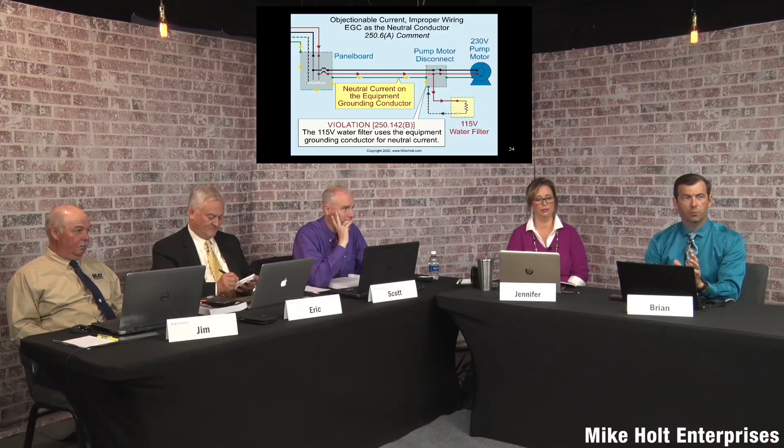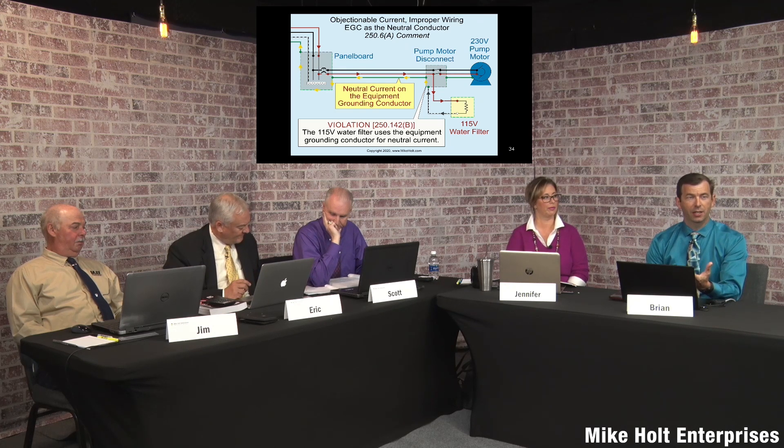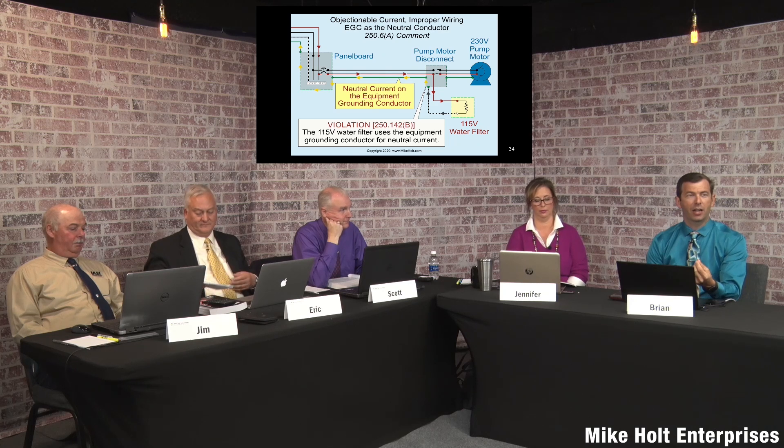A voltmeter measures the difference of potential — the difference between two points, not the same point. Take a voltmeter and connect it to the same terminal in a panel — what does it measure? Zero, because you're touching the same point. The white wire doesn't appear to have any voltage on it, but it is carrying current. All of the voltage has been consumed by the time it gets to the neutral bus, but if you disconnect the circuit you have all the voltage again because it's not a complete circuit — very confusing.